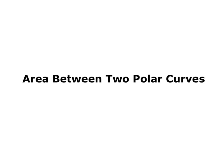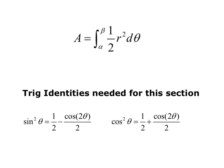This video is about finding the area between two polar curves. Recall from the last video: the area inside a polar curve is given by A equals the integral from alpha to beta of one half r squared d theta. The trig identities needed for this section are sine squared theta equals one half minus cosine of 2 theta over 2, and cosine squared theta equals one half plus cosine of 2 theta over 2.